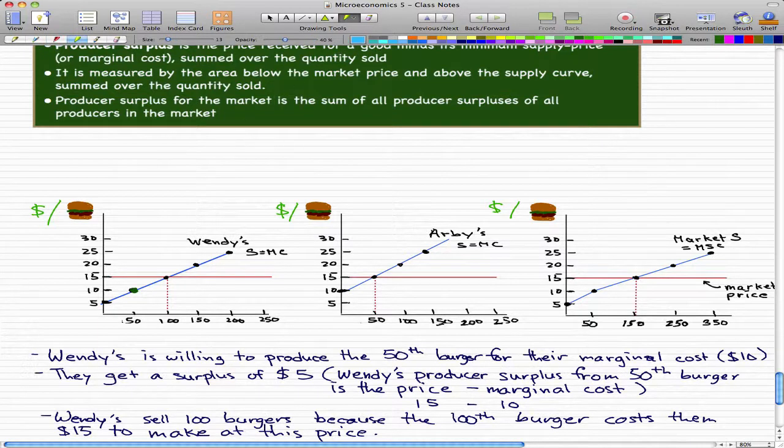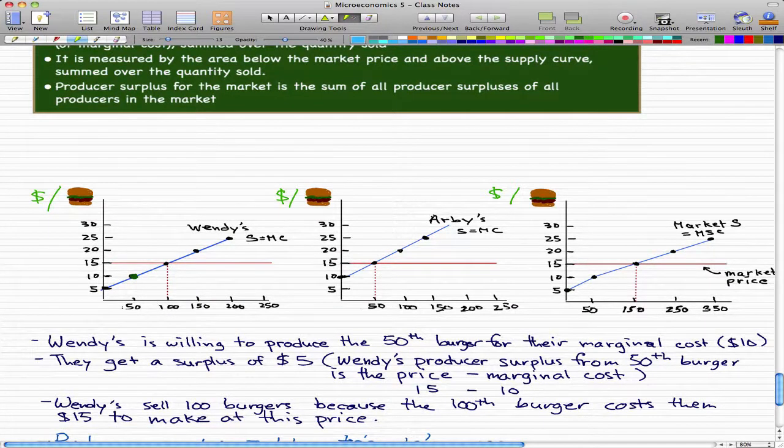So we found out that at $15 a burger, Wendy's willing to make 100 burgers. At $15 a burger, Arby's is willing to make 50 burgers. So the producer surpluses of these two producers is actually this blue part that I'm highlighting right now, or this blue triangle, and one for Arby's.